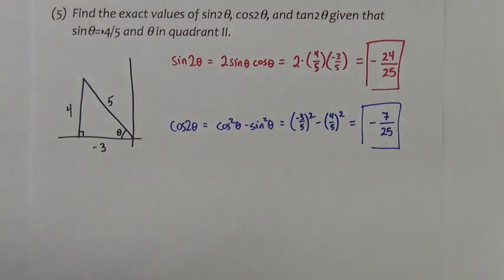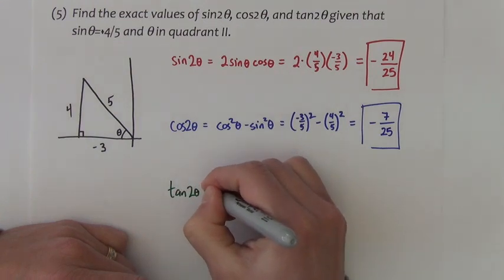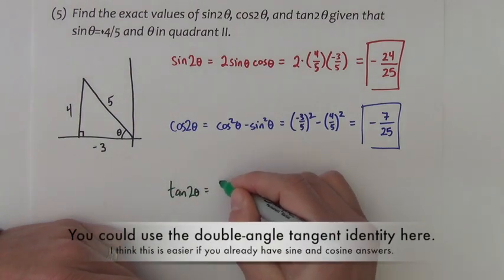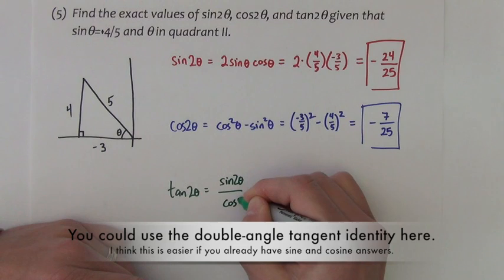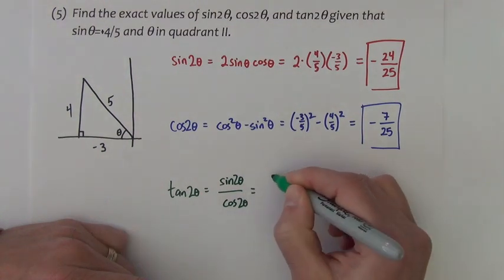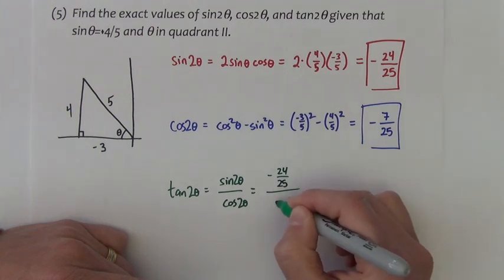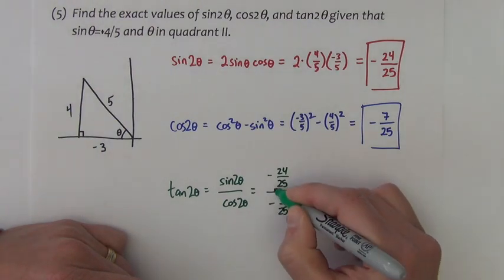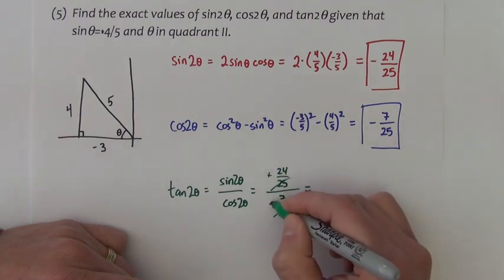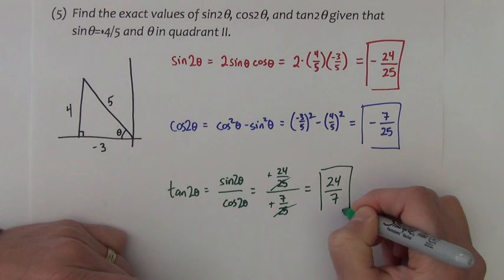Finally we want the tangent of 2θ. There is a formula for that. There's also the quotient identity that says tangent equals sine over cosine. I'm just going to take my sine answer divided by my cosine answer. The 25ths drop out, the negatives make positive, and this is 24 sevenths.